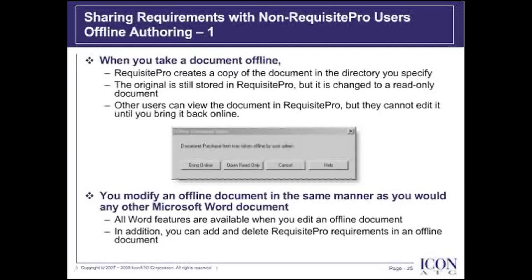When you take a document offline, Requisite Pro creates a copy of the document in the directory you specify. The original is still stored in Requisite Pro but changed to a read-only state. Other users can still view the document in Requisite Pro, but they cannot edit it until you bring it back online.